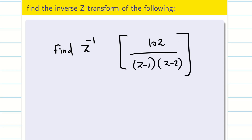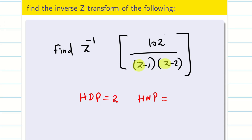You know the partial fraction method from your school days — just a quick recap. When can I apply the partial fraction method? I have to check the highest denominator power (HDP) and highest numerator power (HNP). Here, the highest denominator power is z times z, which is z squared, so HDP is 2. The highest numerator power is 1. Whenever HDP is greater than HNP, only then can I apply the partial fraction method; otherwise I have to do some simplification.